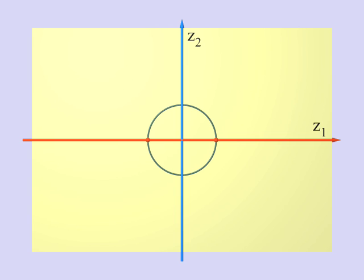Now what do you see? A circle? Yes and no. What you see, or rather what you should imagine, is the set of points in four-dimensional space that are at distance 1 from the origin. In other words, this is nothing other than the three-sphere, S3. Of course, you need to have a little imagination.